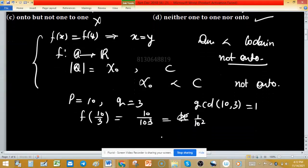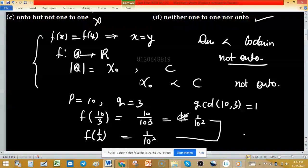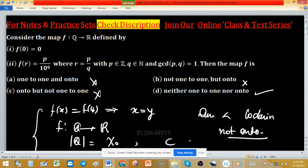And the other point is f(1/2), means value of p is 1 and value of q is 2. Then value of this one will equal to 1 upon 10 squared. So these two images are same, but domain points means 10/3 is not same as 1/2. So function is not one-to-one. So only option d is correct.